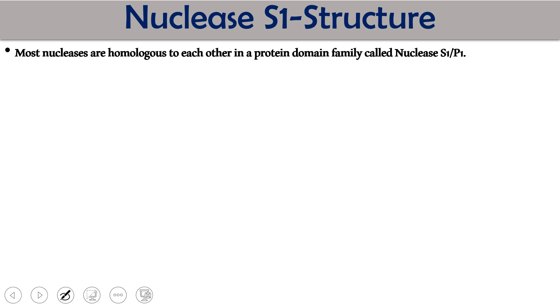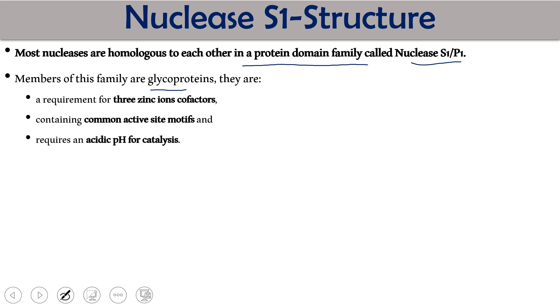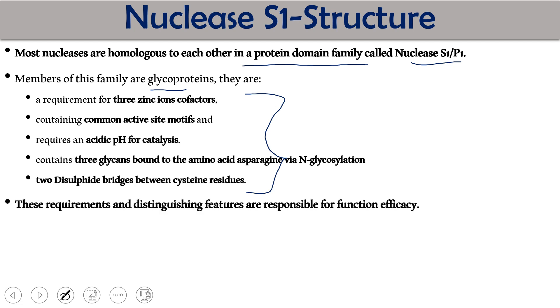Most nucleases are homologous to each other in a protein domain family called Nuclease S1 P1. Members of this family have certain characteristic features. They are glycoproteins in nature, associated with carbohydrate molecules. Each nuclease enzyme requires three zinc molecules as a cofactor. It contains a common active site motif. It requires acidic pH, as you have seen 4.5 is the optimum pH. It contains three glycan bonds with the amino acid asparagine via N-glycosylation and has two disulfide bridges between cysteine residues.